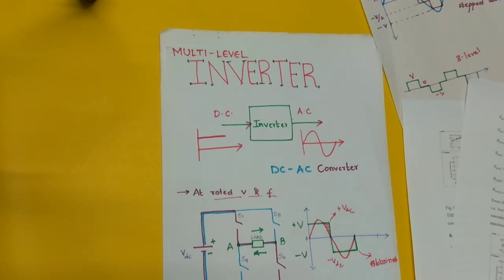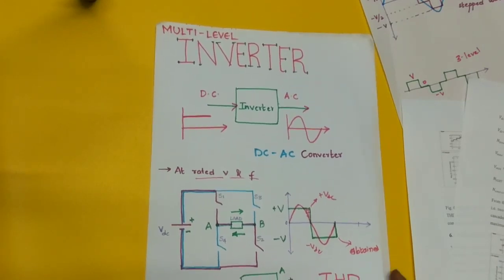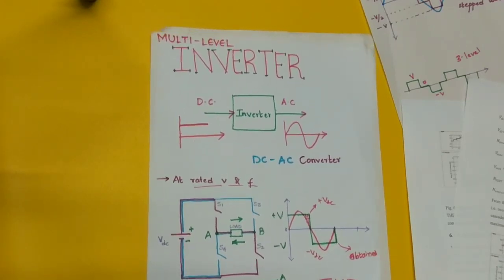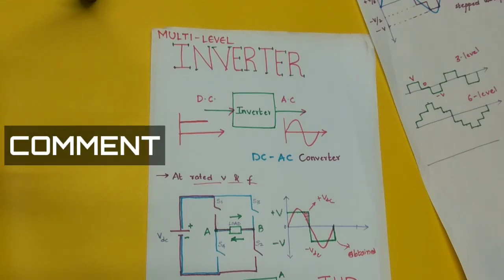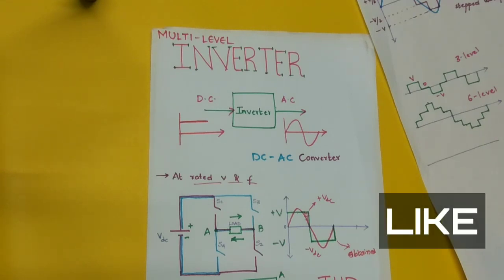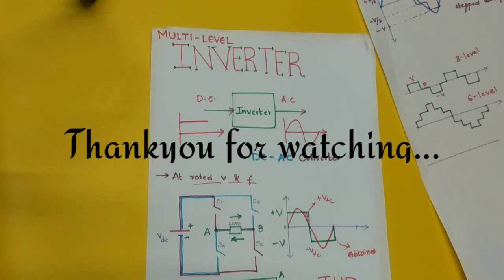So as we go for higher and higher levels, the THD will be reduced. But the problem is the cost increases because the number of devices implemented in the topology increases and the complexity grows as well. It is very much required to be careful while designing a multilevel inverter. I hope you understood basically what a multilevel inverter is — if you have any doubts, comment below, give a thumbs up, and share with your friends. Thank you for watching.